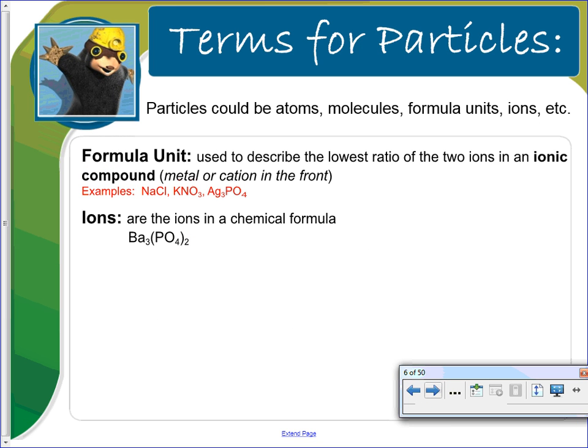That can also be formula units used to describe the lowest ratio of two ions in an ionic compound. So you have sodium chloride, potassium nitrate, and silver phosphate. And then you can also talk about in terms of ions. This is barium phosphate. And we'll talk a little bit more about ions in a bit.